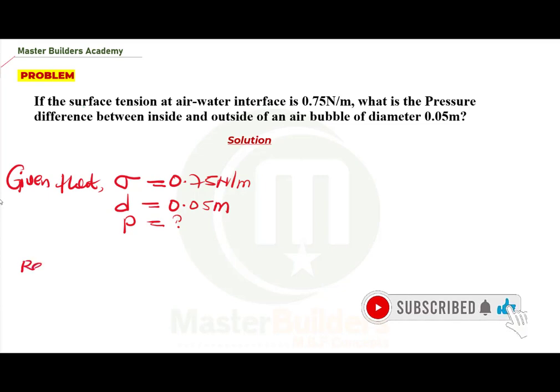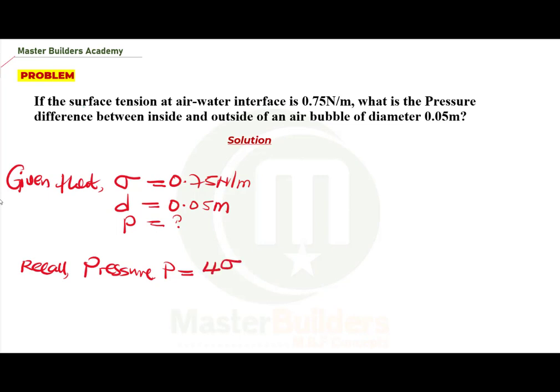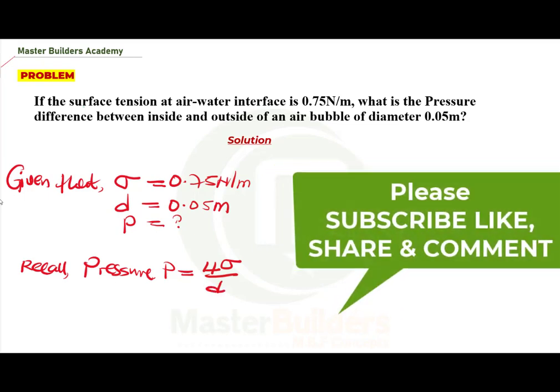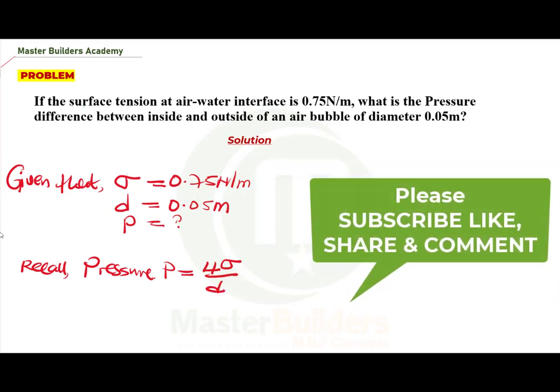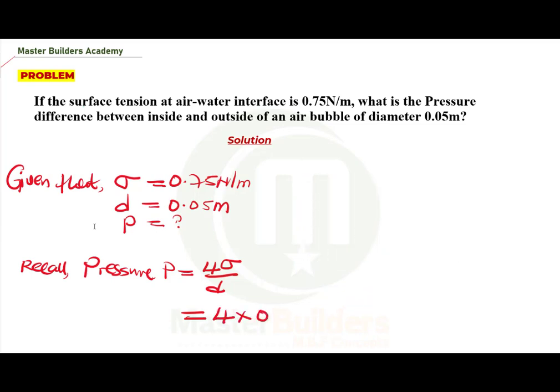...is to recall that pressure P is equal to, for air bubble, the pressure is given as 4 multiplied by surface tension all over d. Okay, then by the time we substitute this will give us 4 multiplied by 0.75 all over 0.05.